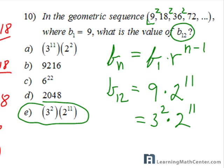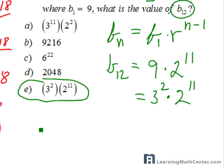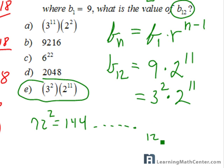You can also solve this problem without using the formula if you don't remember it — though the formula does come in handy during an SAT test. If you don't remember, there's another way. So far in the sequence you have four terms, and you just continue multiplying by 2. From 72, multiply by 2 to get 144 — that would be your fifth term — and continue in this manner until you reach the 12th term.